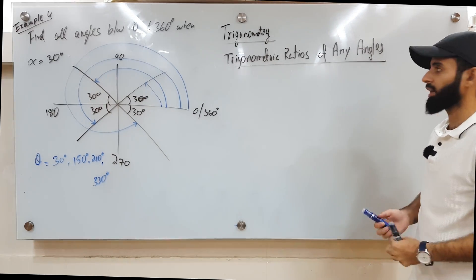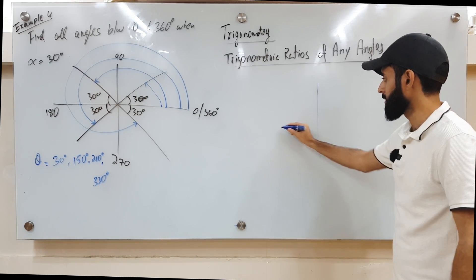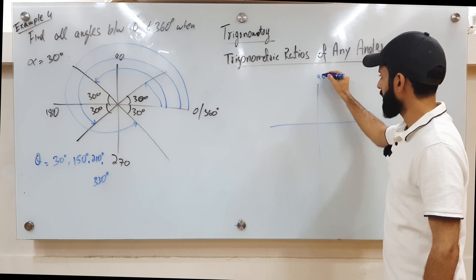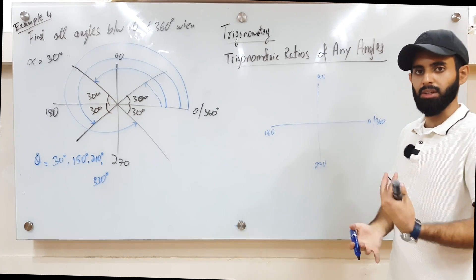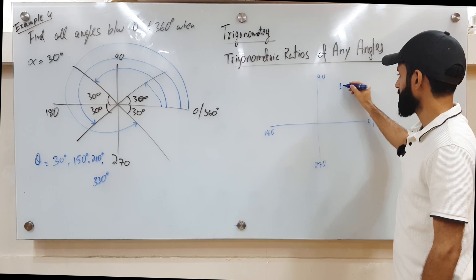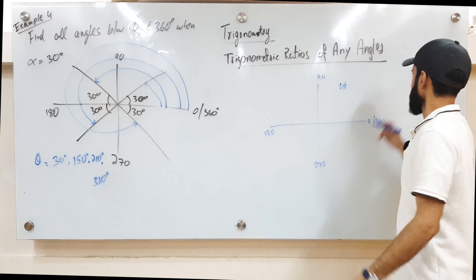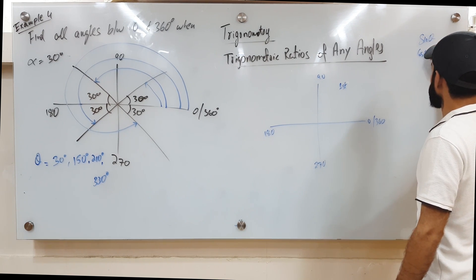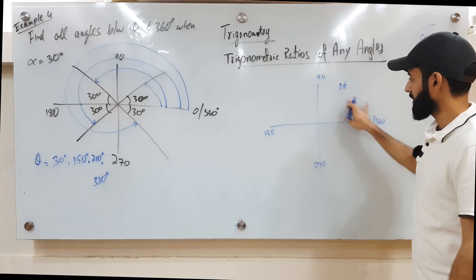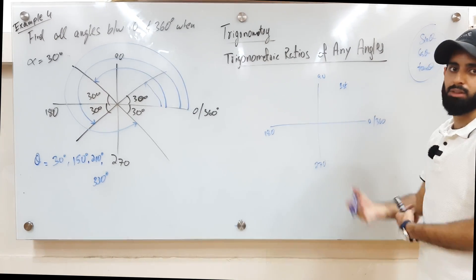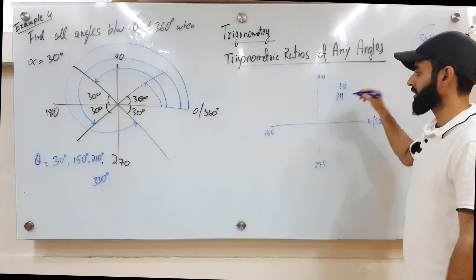Now we come to the next concept: trigonometric ratios of any angle. We're going to look deeply at sine, cos, and tan. It's important to know in which quadrant each trigonometric function is positive or negative. In the first quadrant — where theta is between 0 and 90 — all three trigonometric functions, sine theta, cos theta, and tan theta, give a positive value. So as far as the first quadrant is concerned, all trigonometric ratios are positive.